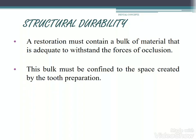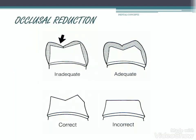The next factor is structural durability. The restoration must contain a bulk of material adequate to withstand the forces of occlusion, and this bulk must be confined to the space created by tooth preparation. Occlusal reduction is very important — inadequate occlusal reduction results in inadequate bulk of material. While doing occlusal reduction, we must follow the occlusal anatomy in order to gain enough space for the material.